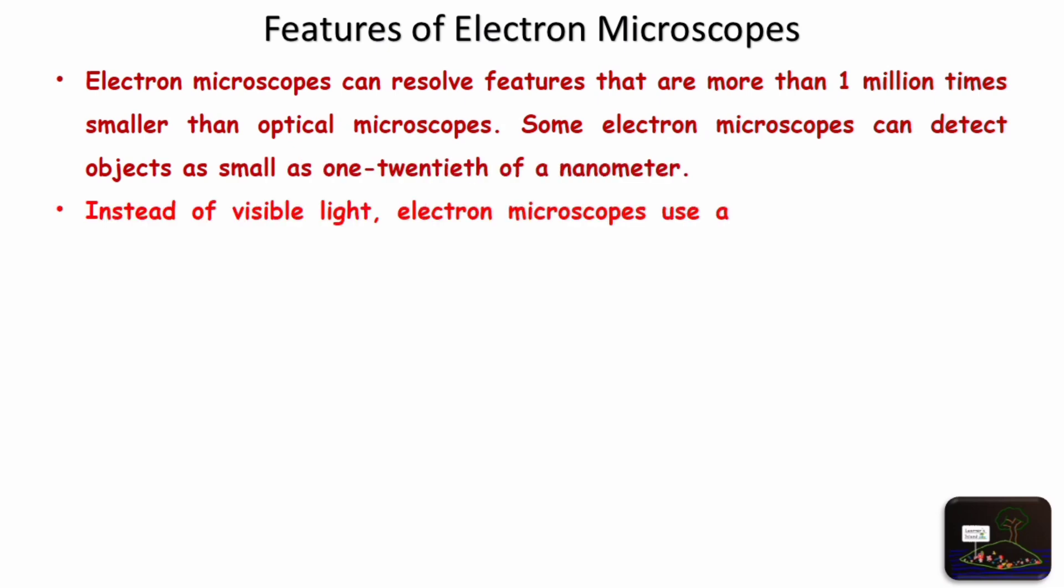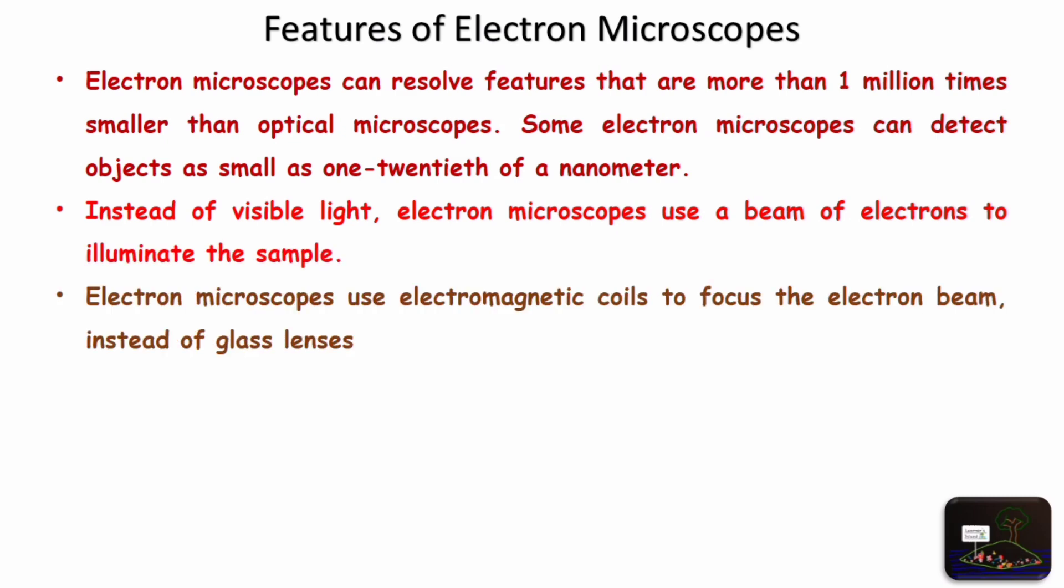Instead of visible light, electron microscopes use a beam of electrons to illuminate the sample. Electron microscopes use electromagnetic coils to focus electron beam instead of glass lenses.